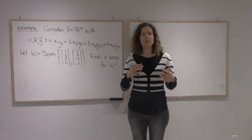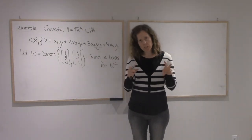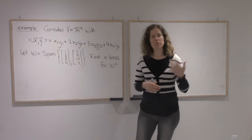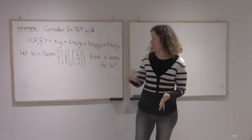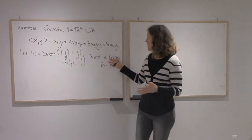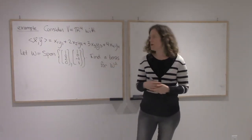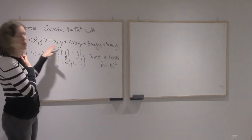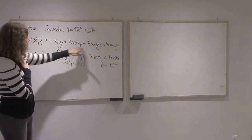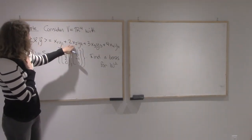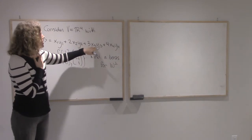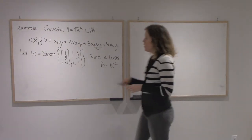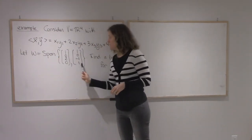Two videos ago we found a way of finding conditions to describe W-perp. Last video we proved that W-perp is actually a subspace. Now we'll put the two together and get a basis for W-perp. I'm looking at R4 as a vector space but with a stranger inner product: x1y1 + 2x2y2 + 3x3y3 + 4x4y4. I want to know what W-perp is for W generated by these two vectors.